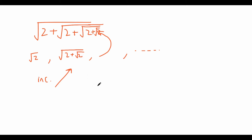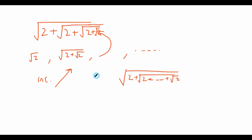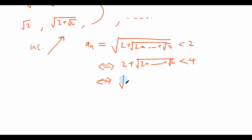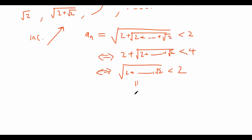What number can we use to bound this from above? We can try the number 2. Let's suppose we want to prove that the nested root with n square roots — call this the n-th term — is less than 2. To prove this, let's square both sides: this is equivalent to showing 2 plus the inner nested root is less than 4, which is equivalent to showing the inner nested root is less than 2. The expression on the left-hand side is exactly the (n−1)-th term.